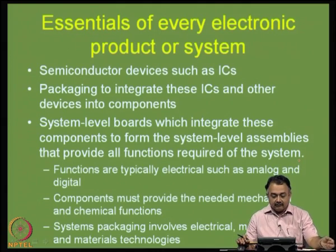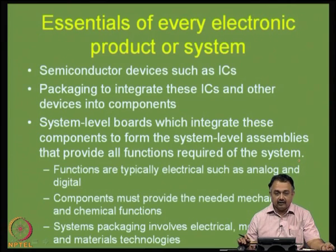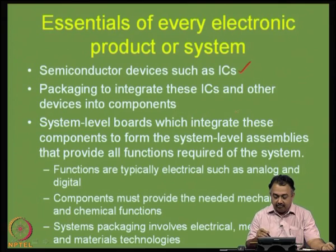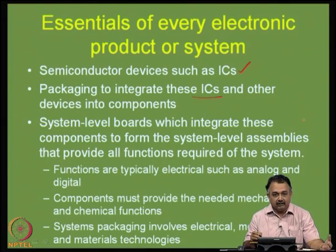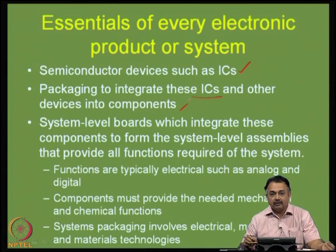What are the essentials of every electronic product or system? If you open up a system, you will see semiconductor devices such as integrated circuits. There will be packaging to integrate these ICs and other devices into components. When a bare die or IC is manufactured, a group of these ICs are put together and interconnected to form components. From transistors, we move into well-defined packaged components used in every system.